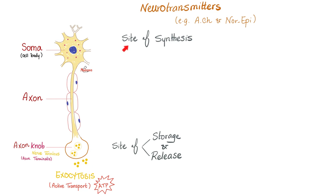What's that neurotransmitter? Where is it made? It's made in the soma. Where is it stored? In the axon terminalis. Where is it released from? The axon terminalis. How? By exocytosis. Exocytosis is active transport, which means it requires energy — it needs ATP. Examples of neurotransmitters include acetylcholine and norepinephrine, the two most famous ones. Others include dopamine, serotonin, etc.